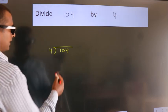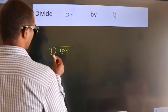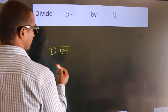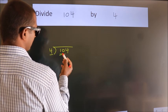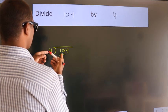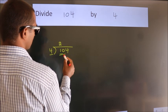Next, here we have 1, here 4. 1 is smaller than 4, so we should take 2 numbers: 10. A number close to 10 in the 4 table is 4 twos, 8.